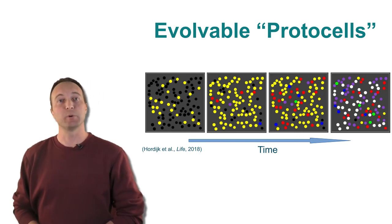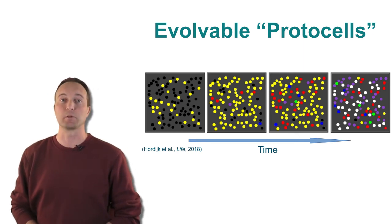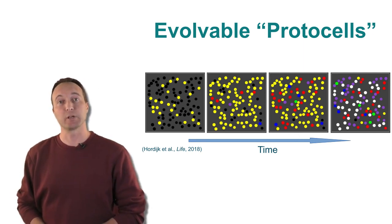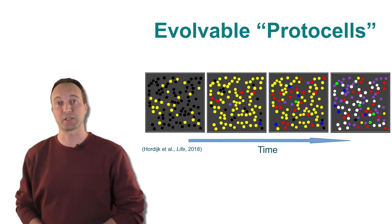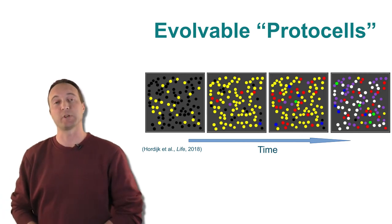These results are mostly based on computational models of chemical reaction networks, such as the bitstring model. However, the formal autocatalytic sets framework has also been used to study and understand the existing experimental networks in more detail, both the RNA one and the peptide one.